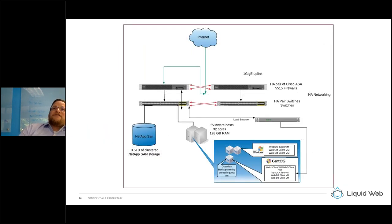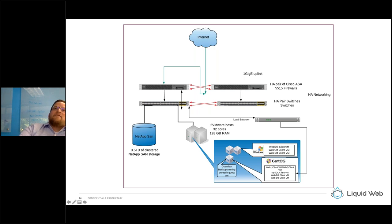We provided HA without the need to re-architect all sites and applications, which was critical for this customer. The architecture features HA firewalls, HA switching, accommodating growth, a load balancer for the high-traffic site, VM backups through our backup product, and a plan to add a third hypervisor as clients are added — plus NetApp SAN on the back end. Most of our packages look like some iteration of what you see in this diagram.